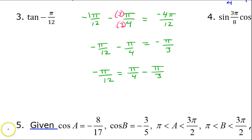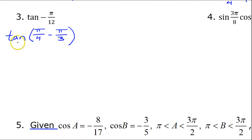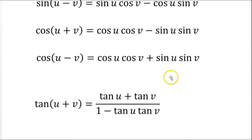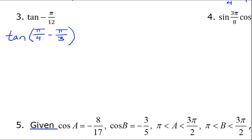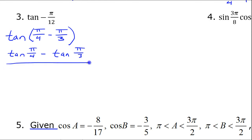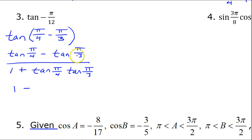I will use this to rewrite the problem. We have the tangent of an angle minus an angle. Looking at the identity, tangent of (A − B) equals (tangent A − tangent B) / (1 + tangent A · tangent B). So that's going to be: [tangent(π/4) − tangent(π/3)] / [1 + tangent(π/4) · tangent(π/3)]. We have memorized that tangent(π/4) is 1, so that becomes 1, and tangent(π/3) is √3.